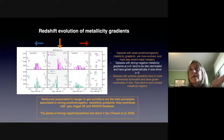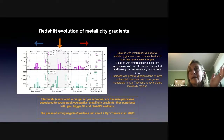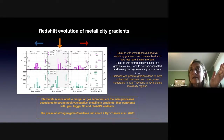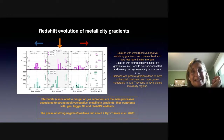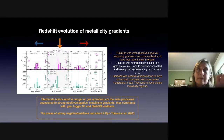In summary, galaxies with strong negative metallicity gradients tend to be more disk-dominated at redshift 1, and they evolve by increasing their size and becoming even more disk-dominated. The metallicity gradient — even though some galaxies have some positive metallicity gradients at higher redshift — for the negative ones, most have weak or negative metallicity gradients, and they evolve to converge to a flat or weak metallicity gradient at redshift 0.